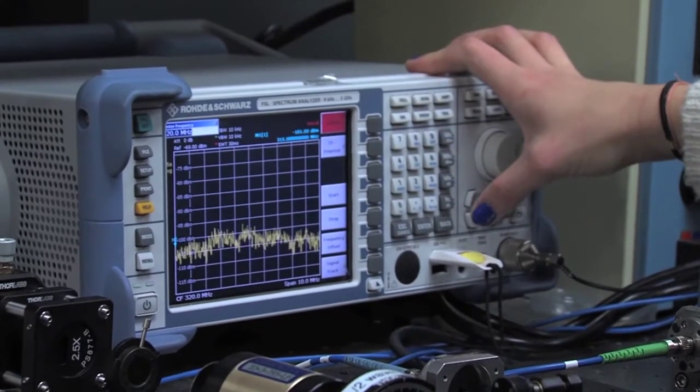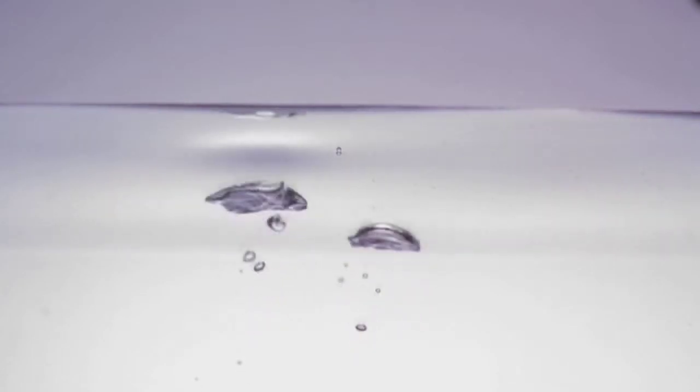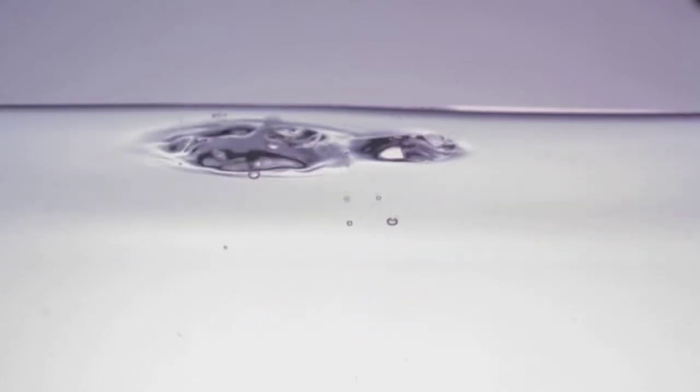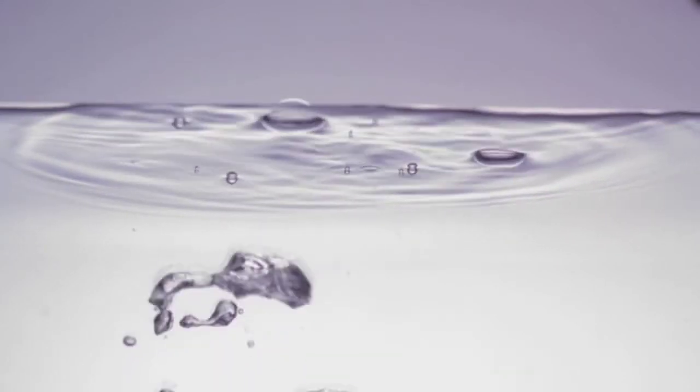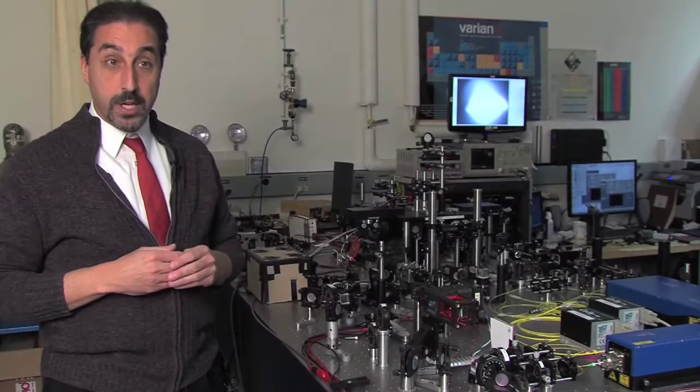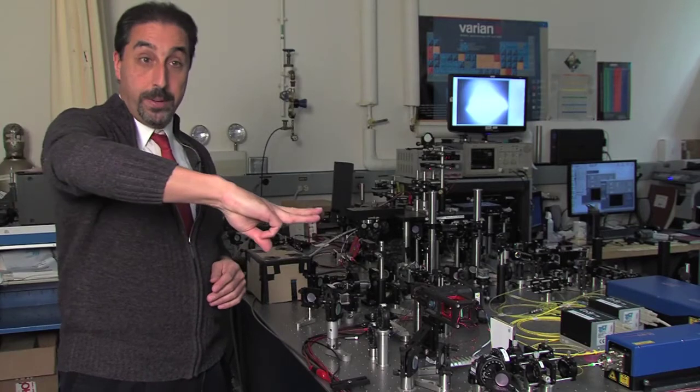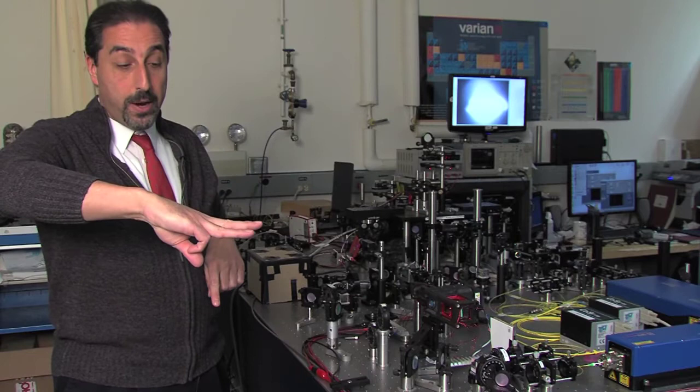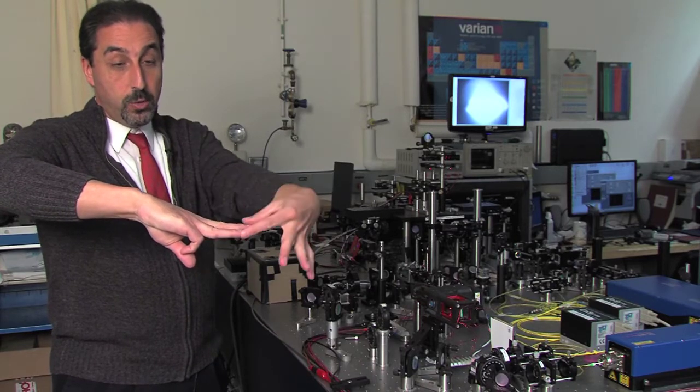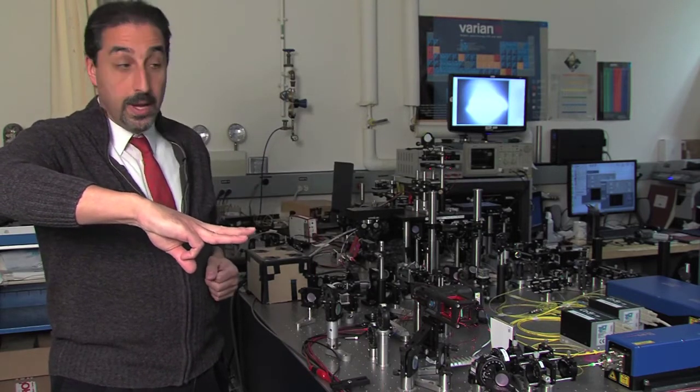Now the question becomes what do we do with it. Basically what happens is we make the atoms interfere with each other, just like waves interfere like water waves—atoms can do the same thing with incredible sensitivity. Basically you can think of it this way: there are three laser beams that go in—one, two, and three—and the atoms are going this way. That interference pattern depends on the spacing between these laser beams.